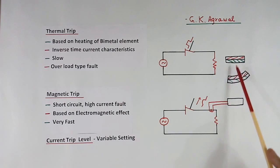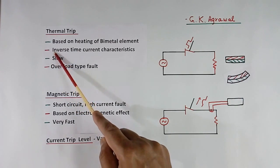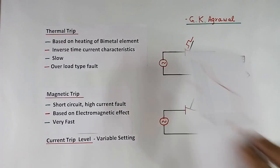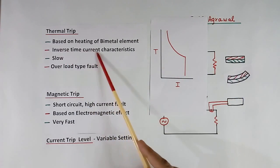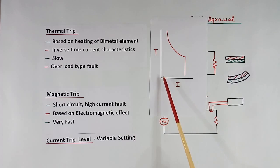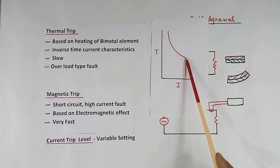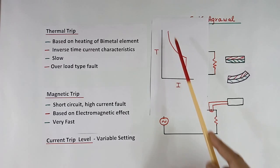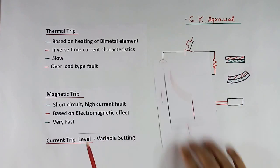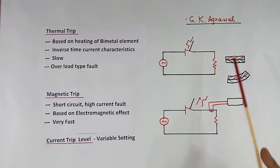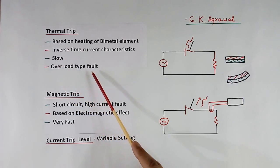Because this is heating based, it is very slow and has inverse time-current characteristics. If current is increasing, trip time is decreasing, because with more current it will heat faster. Because of heating it is slow, and it works when overload comes.